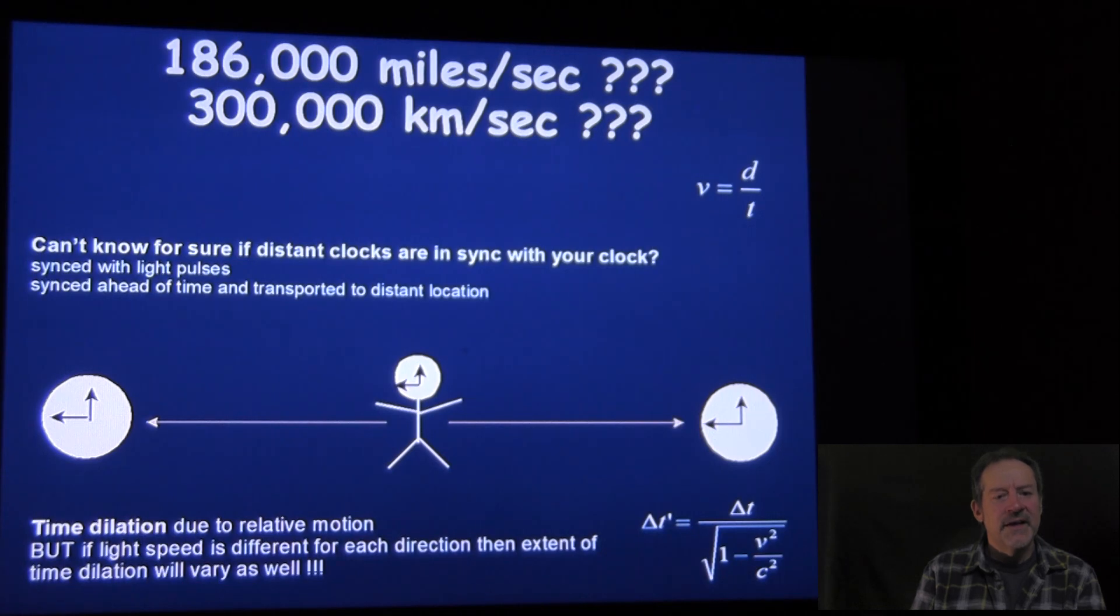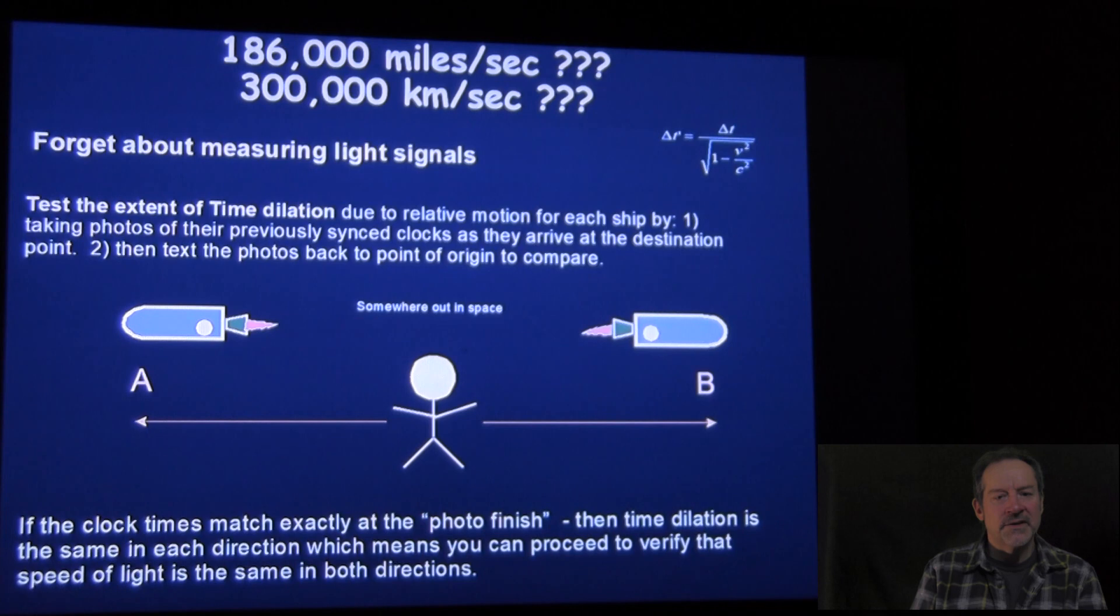So I thought about this and I said, well, I've got an answer to this. And the answer is forget about measuring the light signals, because all of the proposed experiments revolve around trying to isolate the speed of the light signals and determining whether they're the same or not depending on the direction. What I say is, since he brought up the fact that the extent of the time dilation is going to have to be different if the speed is different, and that is a necessary condition, then I would say let's isolate and test the extent of time dilation without having to worry about the light signals, because that would be easy. So if we sync our clocks at our central location and our ships A and B travel in opposite directions, and the finish line so to speak is equidistant in direction A and direction B from the center, then we could take a photograph or a snapshot of those clocks when they cross the finish line for both A and B.